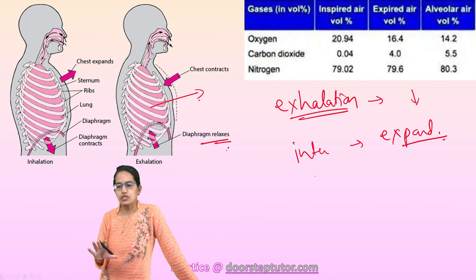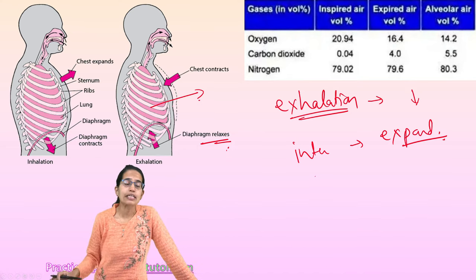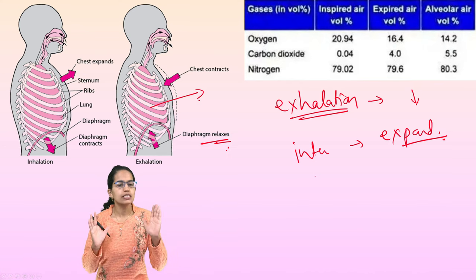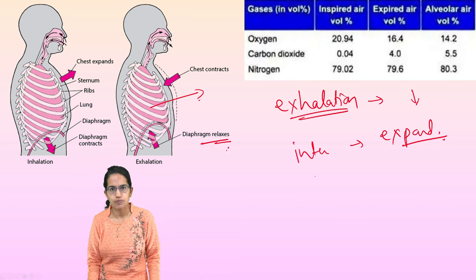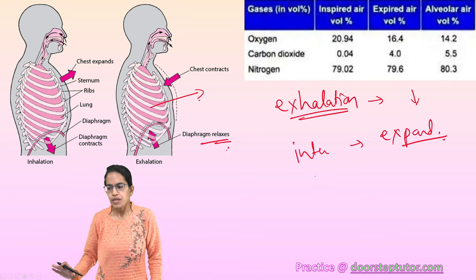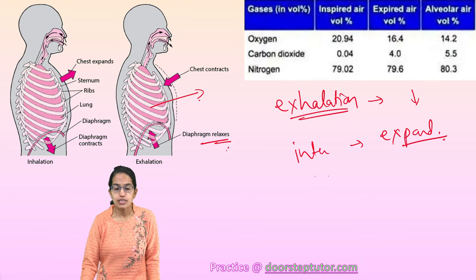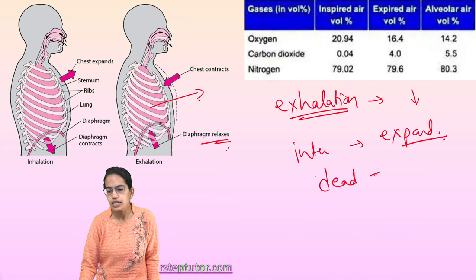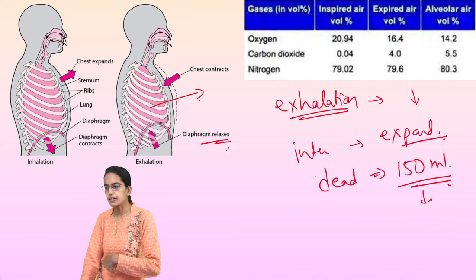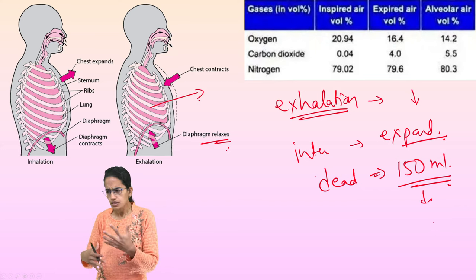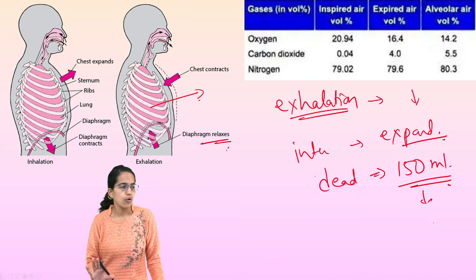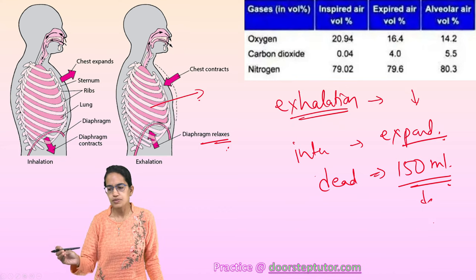Now we will understand the capacity of our lungs — a very important topic with numerous exam questions. One important concept is the dead air space, which is around 150 ml of air left in the respiratory tract. This mixes with the air we inhale within the alveoli and is called the dead air space or reserve air space.